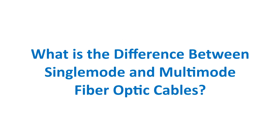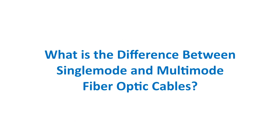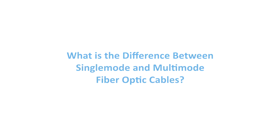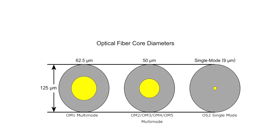Today we'll be looking at the difference between single mode and multi-mode fiber optics. Single mode cables have a small diameter 9 micron core, allowing one pathway of light. Multi-mode cables have two different large diameter core sizes, 50 and 62.5 micron, allowing multiple pathways of light. 50 micron cables provide longer length distance and higher speeds than 62.5 micron cables.